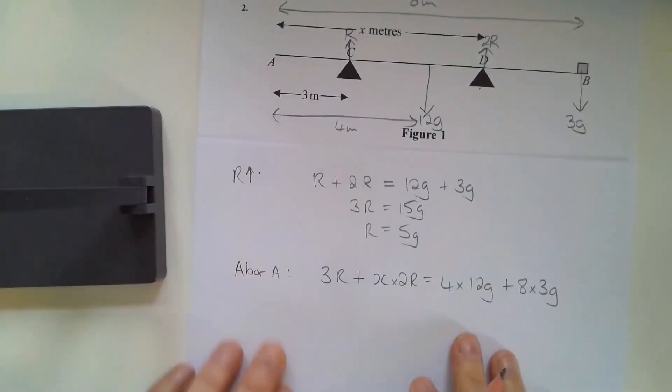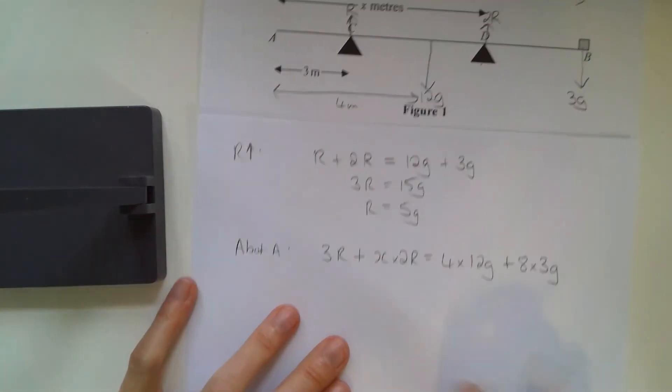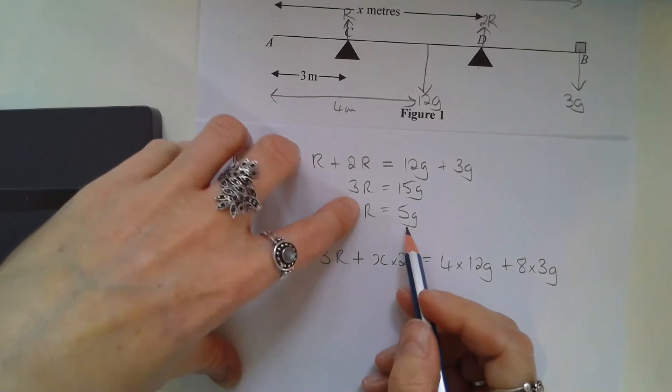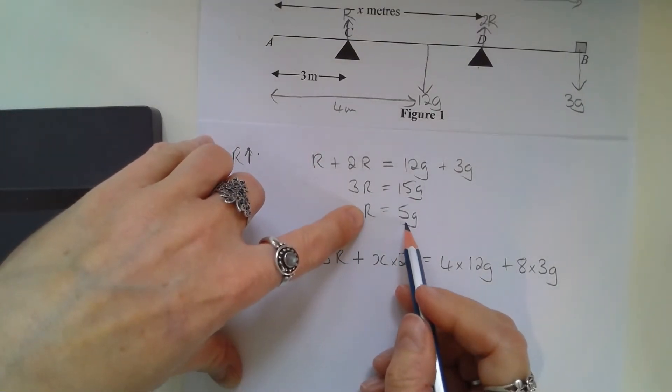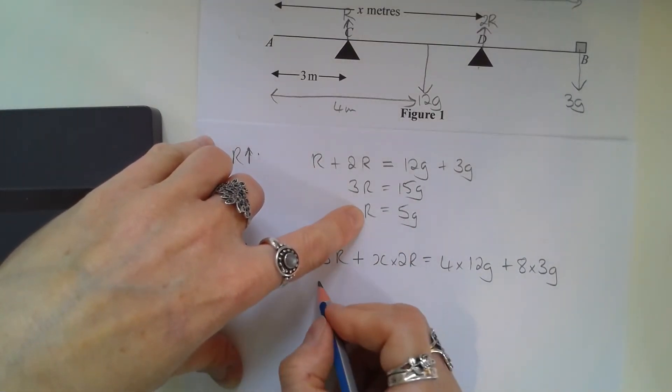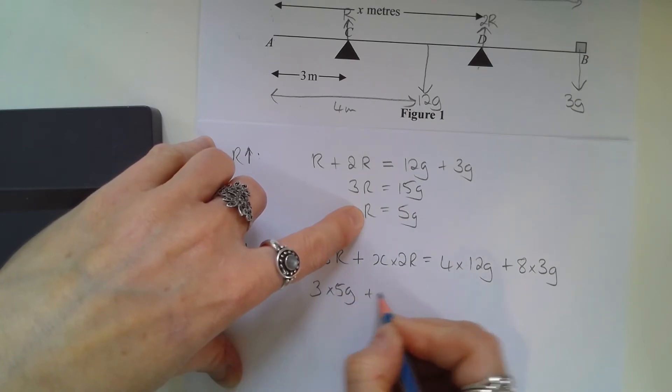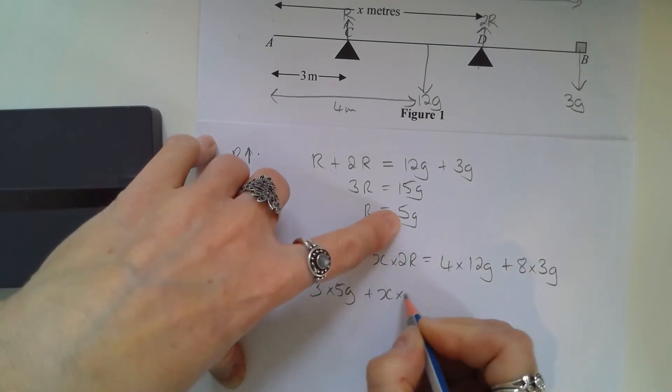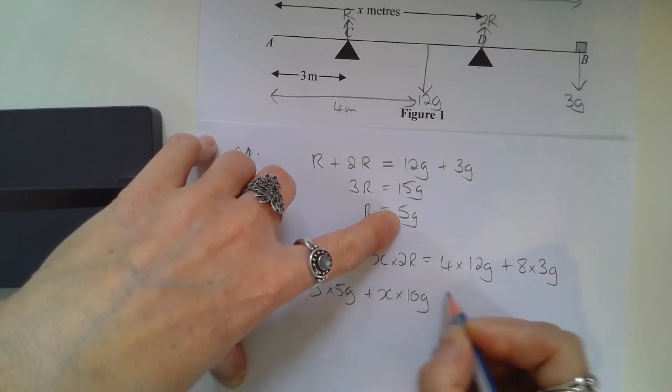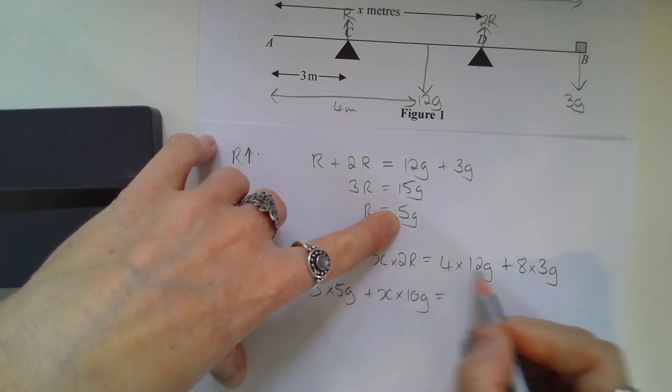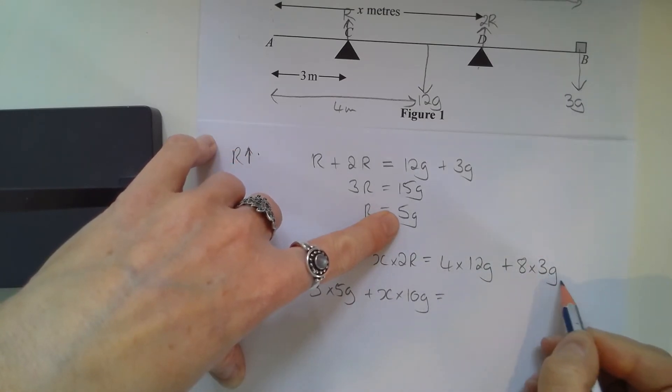And again, I haven't simplified that equation at all yet. So now I'm going to substitute in my values for R. So 3 times 5g plus x times that will be 10g, it's 2R, and then 48g plus 24g gives me 72g.